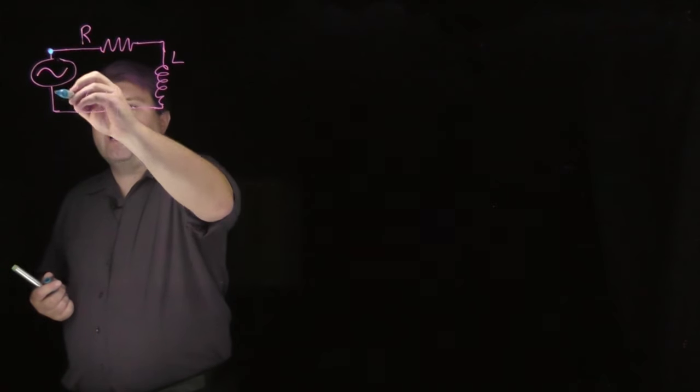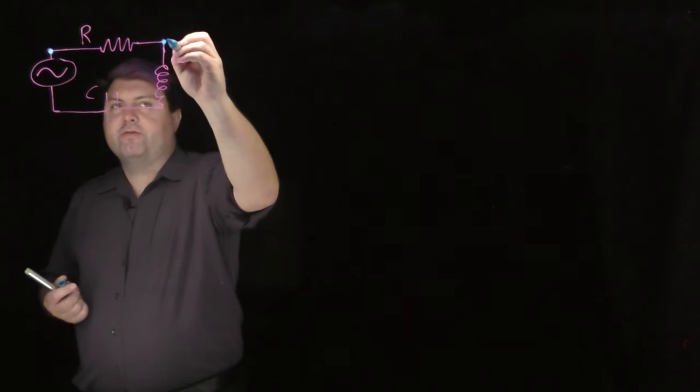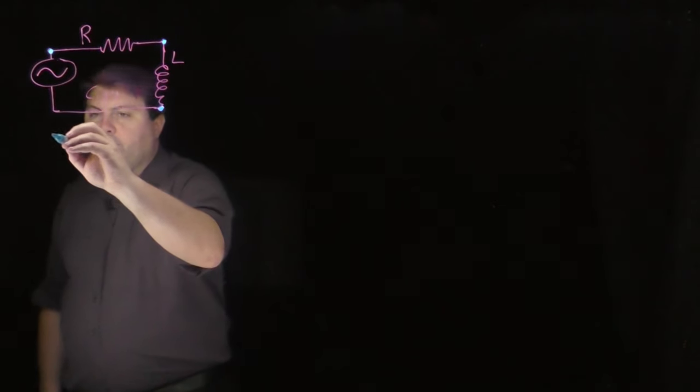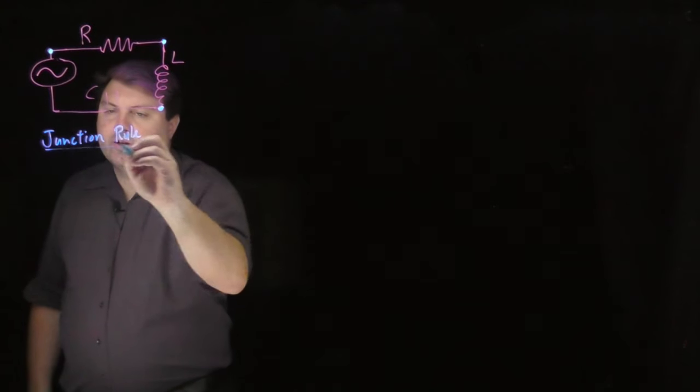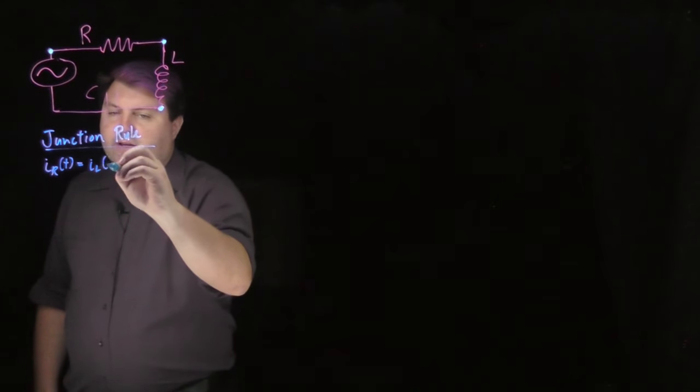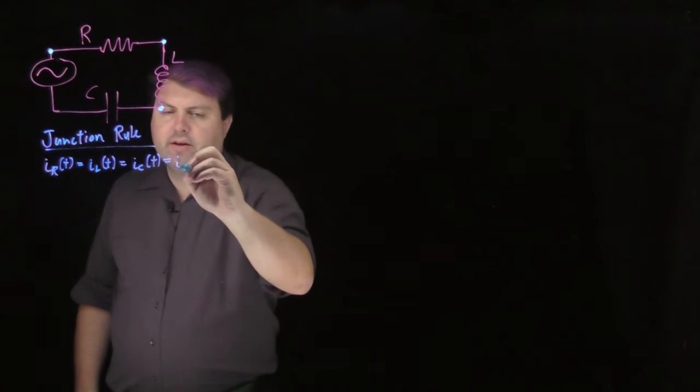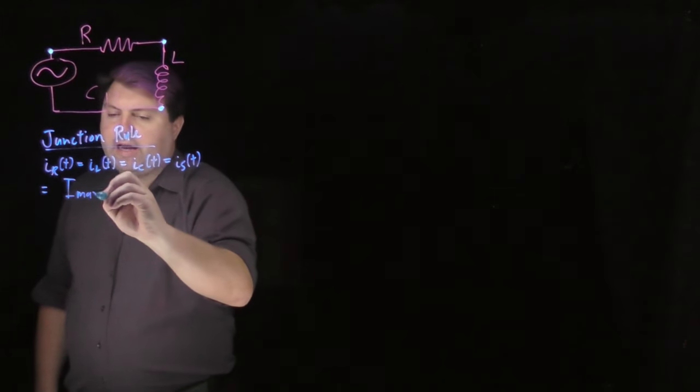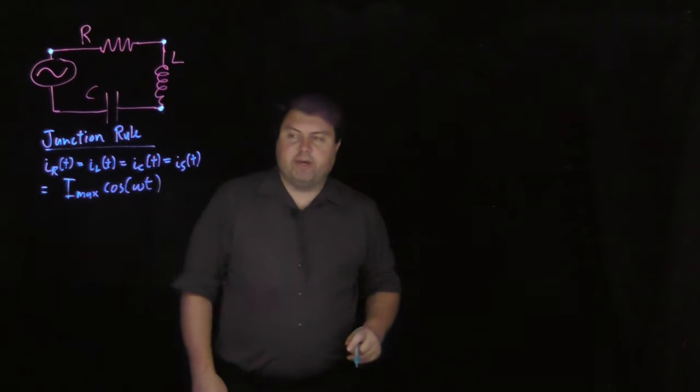Looking at this junction, whatever current goes to the source has to be the same current that goes to the resistor. Whatever current goes to the resistor has to go through the inductor. Whatever goes to the inductor has to go through the capacitor. So we can write this mathematically in the junction rule that the current over the resistor as a function of time is the current over the inductor as a function of time, is the current over the capacitor as a function of time, is the current over the source as a function of time. And then we can treat that as having zero phase angle, just call it I_max cosine omega t.